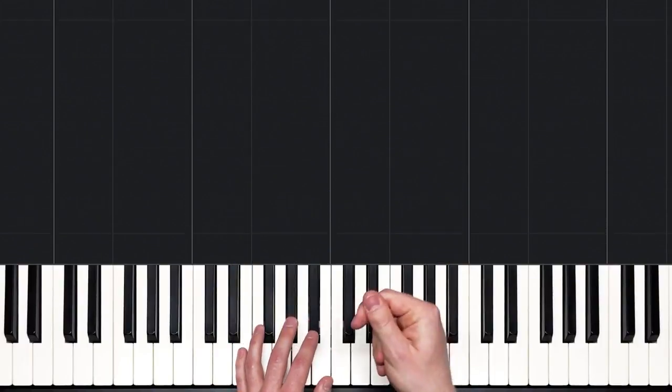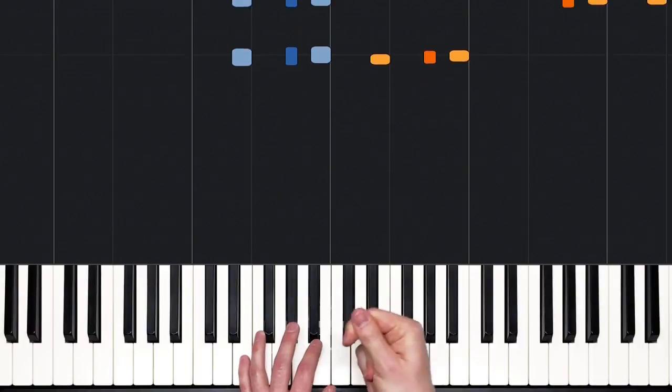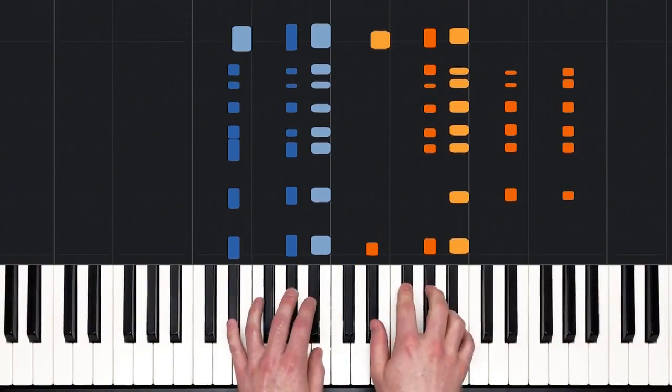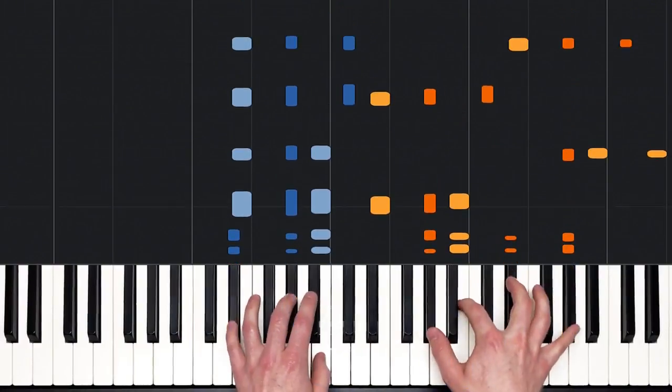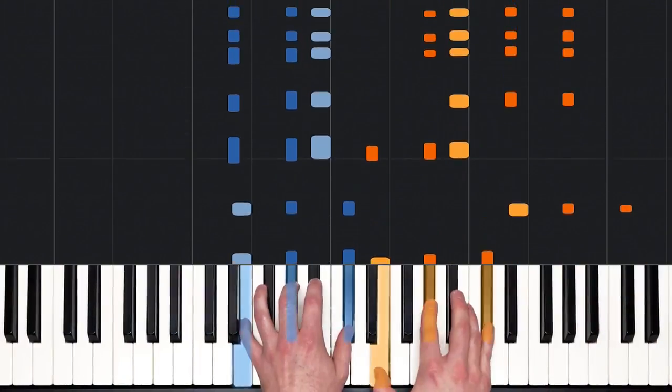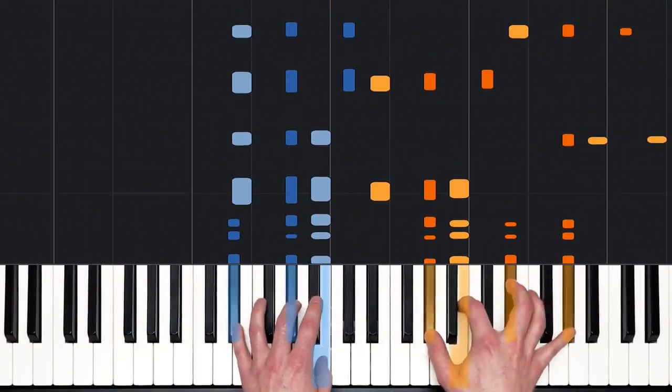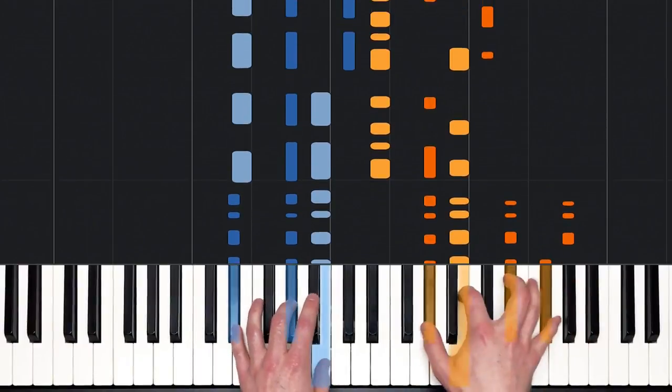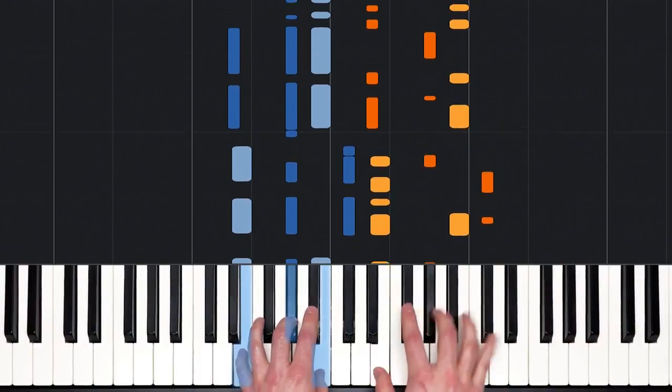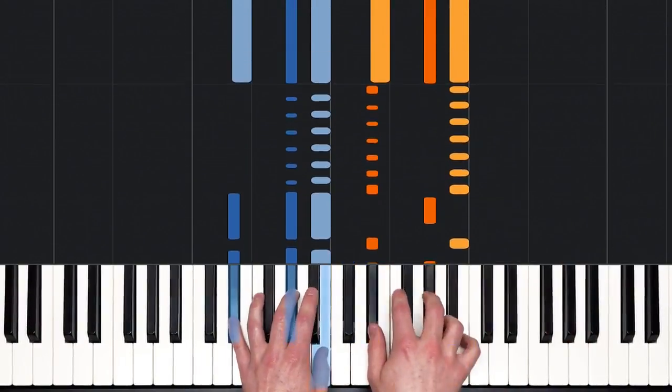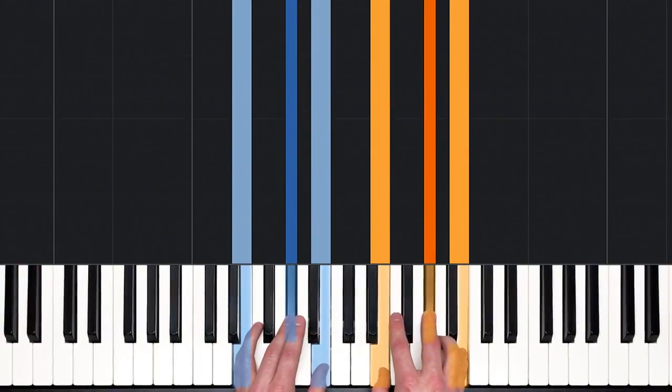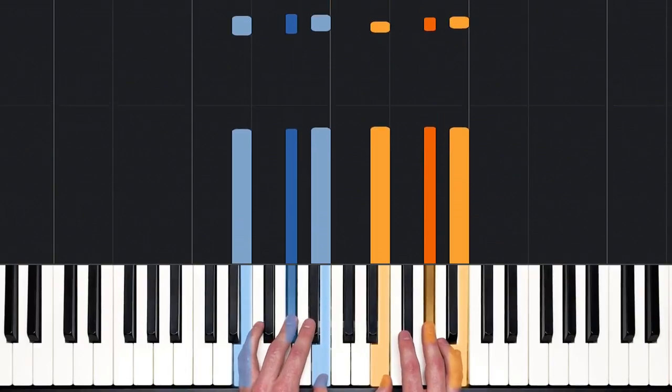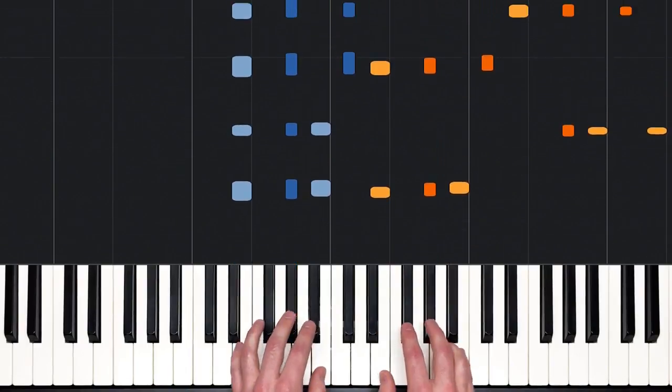Now this is recorded tempo, 93 BPM. One e and a two e and a. Ready? And a play. Let's do that one more time so I can repair those couple small mistakes I made there at the end. Ready? And a play and a.